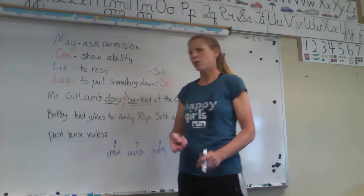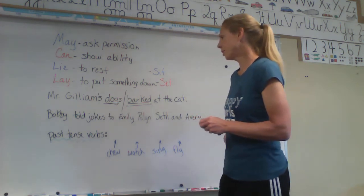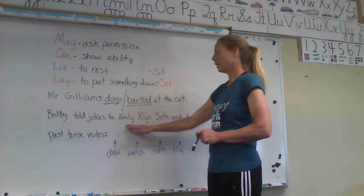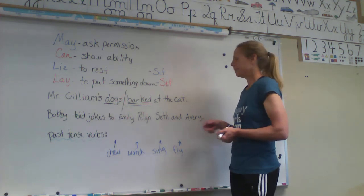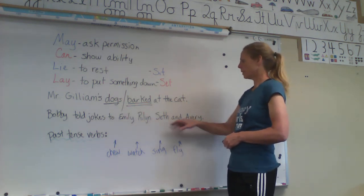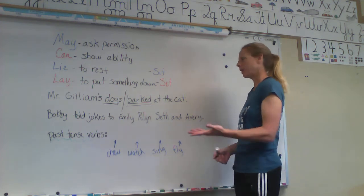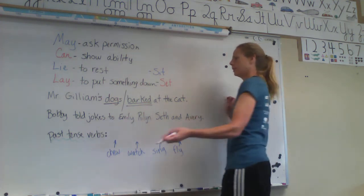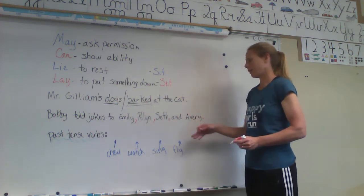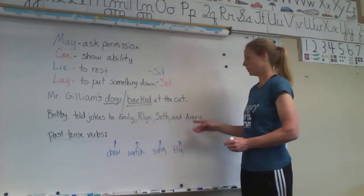You guys are also going to have a section on putting commas in when you have a list of three or more things. Bobby told jokes to Emily, Ryland, Seth, and Avery. So we have a list of people. You would want to put commas in those lists because commas represent a slight pause. Otherwise it would sound like Emily Ryland Seth is her one big name. So you stick your commas in — jokes to Emily, short pause, Ryland, Seth, and Avery. Reminder: that last comma goes before the and. Before the and. Don't need one after.